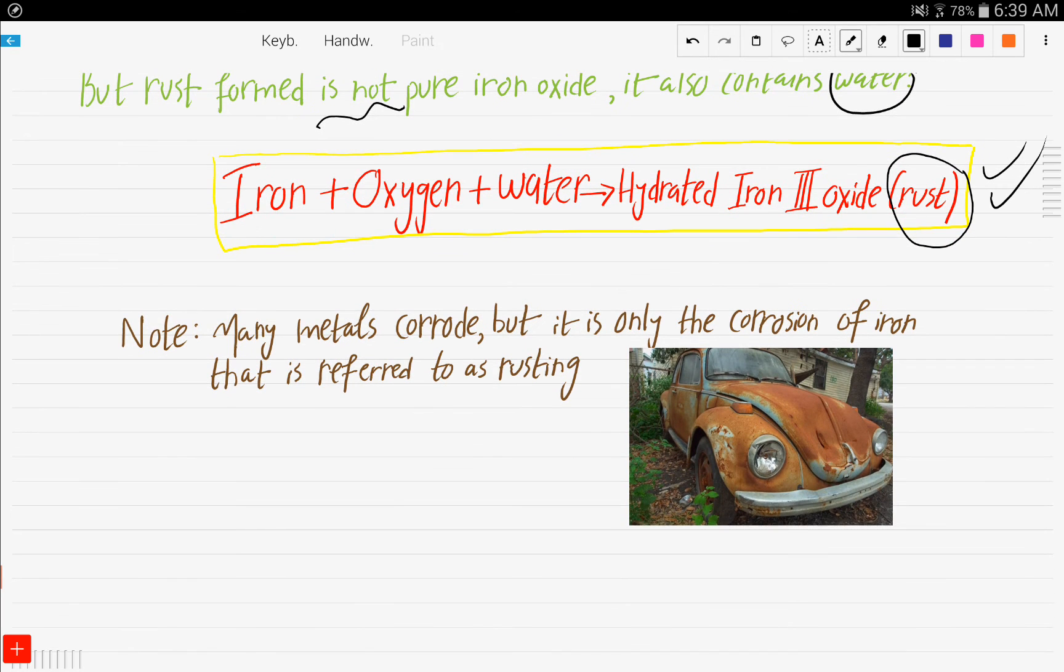Many metals corrode, but it's only that the corrosion of iron is referred to as rusting. So rusting is a term which is used only for the corrosion of iron. Here is a picture of a car which has undergone the rusting process.